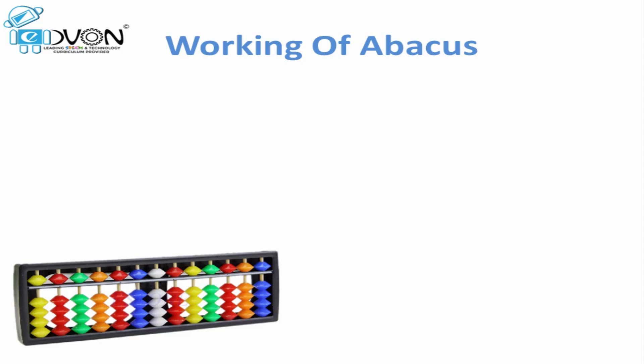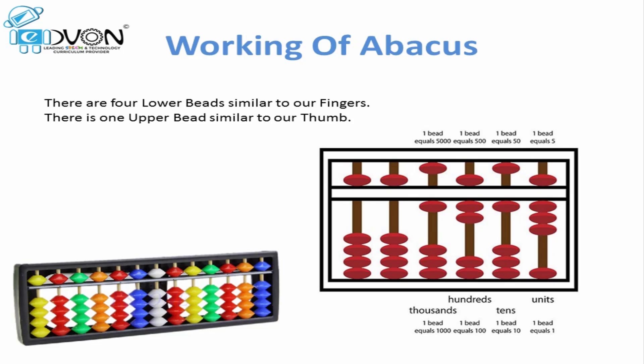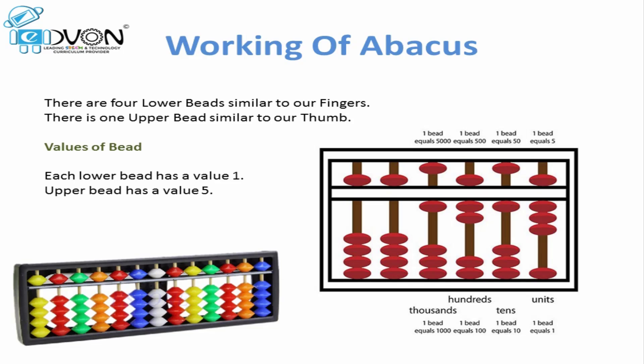Why Japanese abacus? Because the working of finger math and abacus are the same. We have a thumb which has the value five; similarly, the upper bead on abacus also has the value five. We have four fingers which represent the value one; in abacus we have four lower beads, and each bead has a value of one.